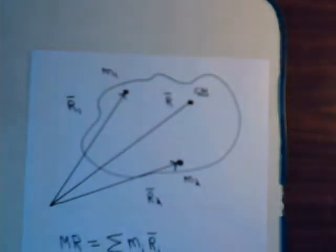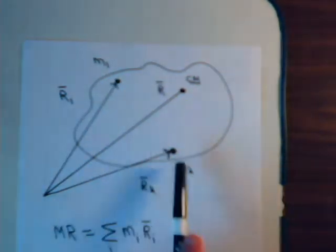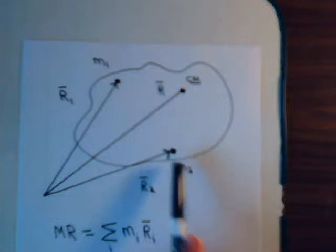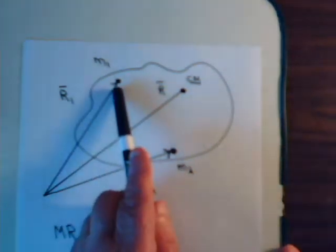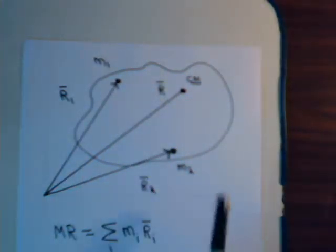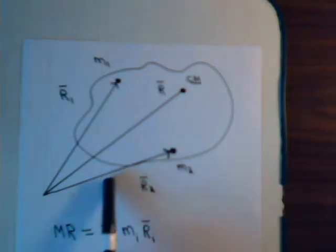Here we have a system, an object, and it's comprised of a series of discrete masses. We only have two of them shown here in the figure, m1 and m2, and each of them has a position vector, r2 for mass m2, r1 for mass m1. And if we take the value of the mass times the length of its position vector, that's called a moment.